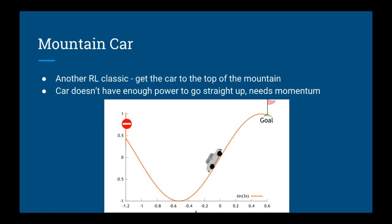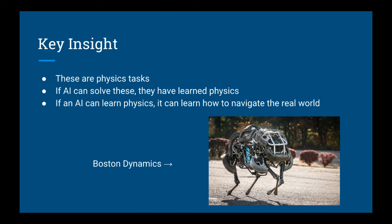We'll also be training an agent for the mountain car task, another reinforcement learning classic. The goal is to apply the right force at the right time to get the car to the top of the mountain. The car by itself can't generate enough force to push itself up in one go, so it has to use momentum to swing itself to the top. One key insight is that if an agent can learn to solve these tasks, it is essentially learning physics, and if it can learn physics, it can learn how to move about physically in the real world.